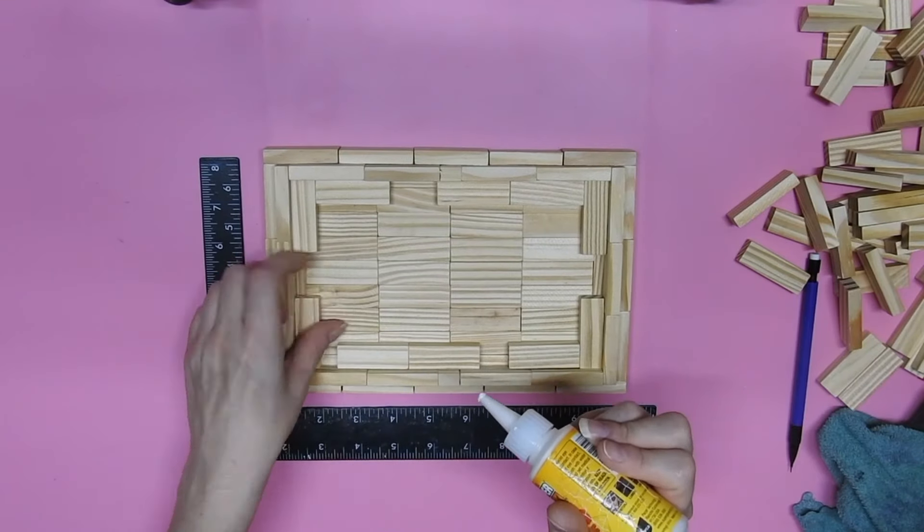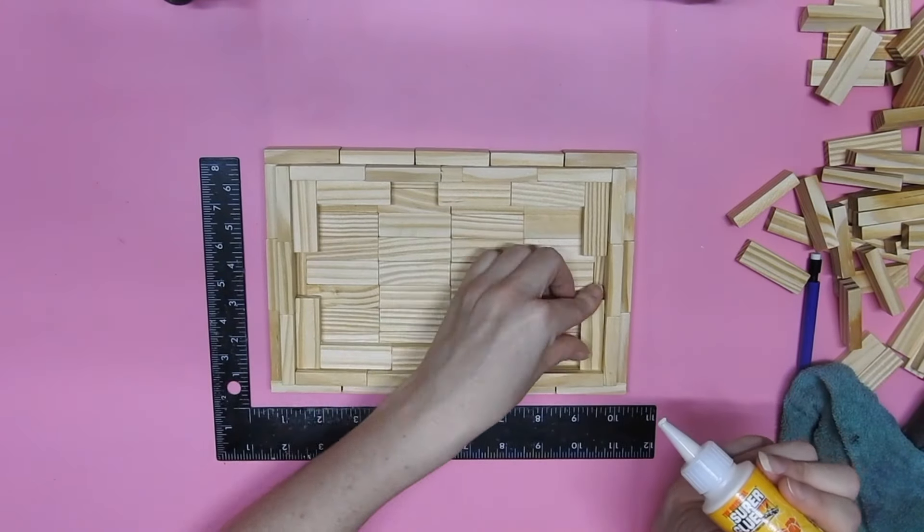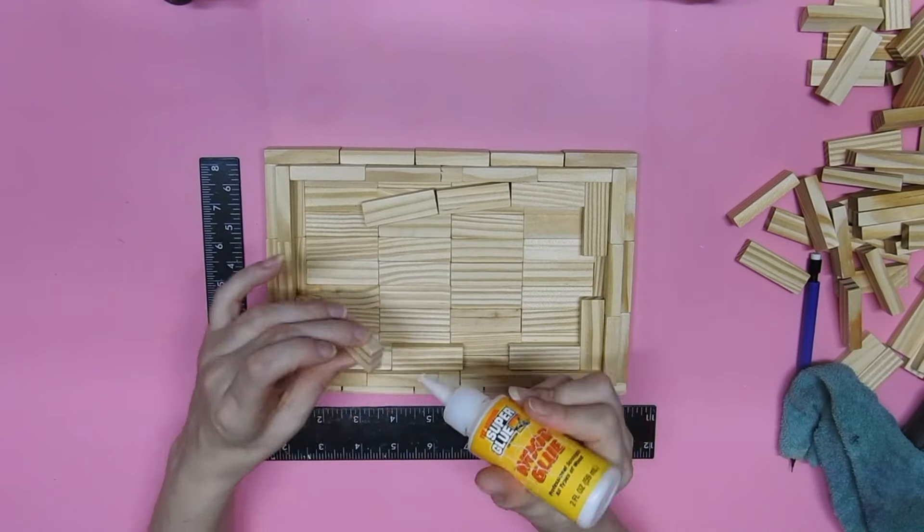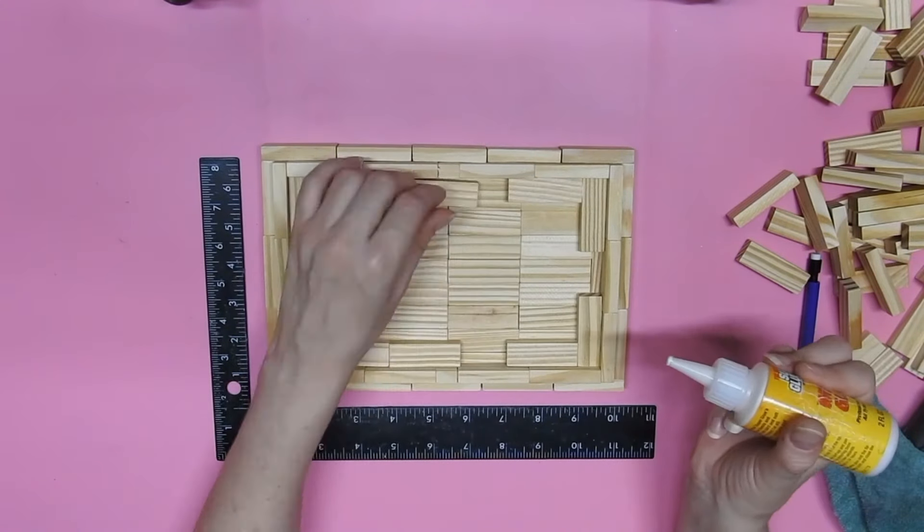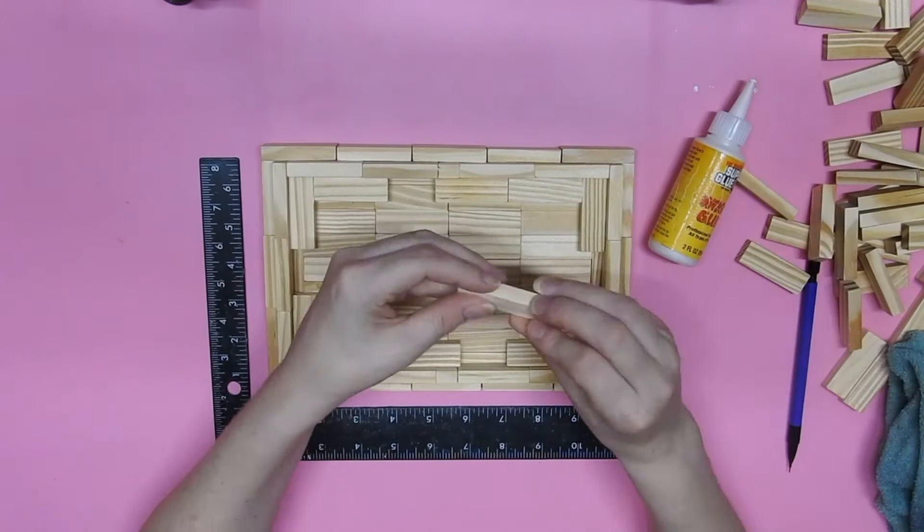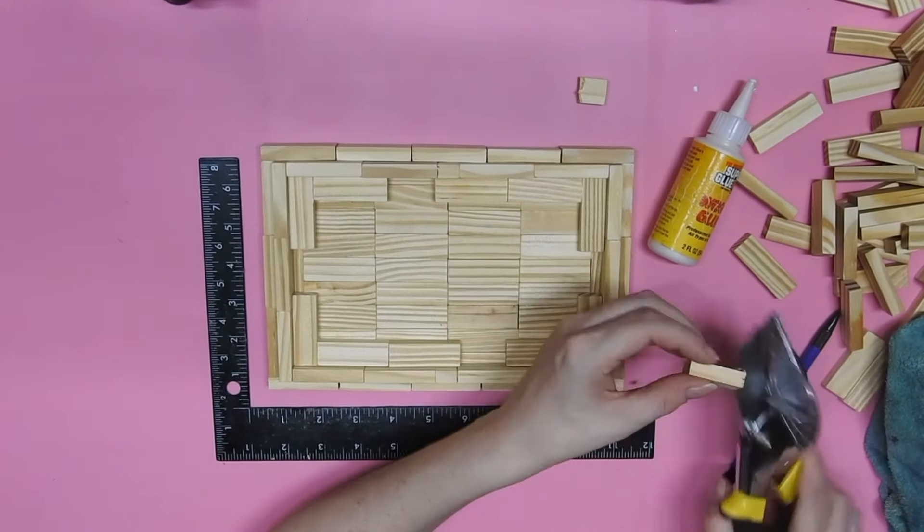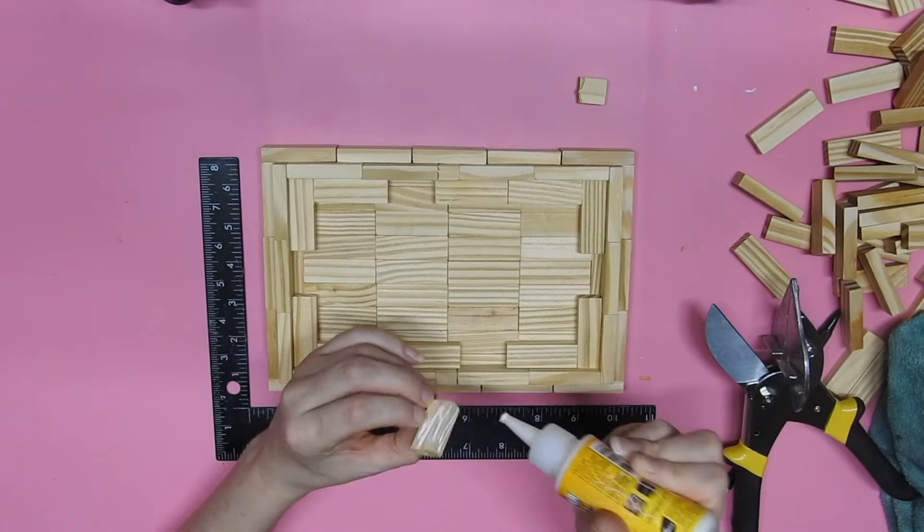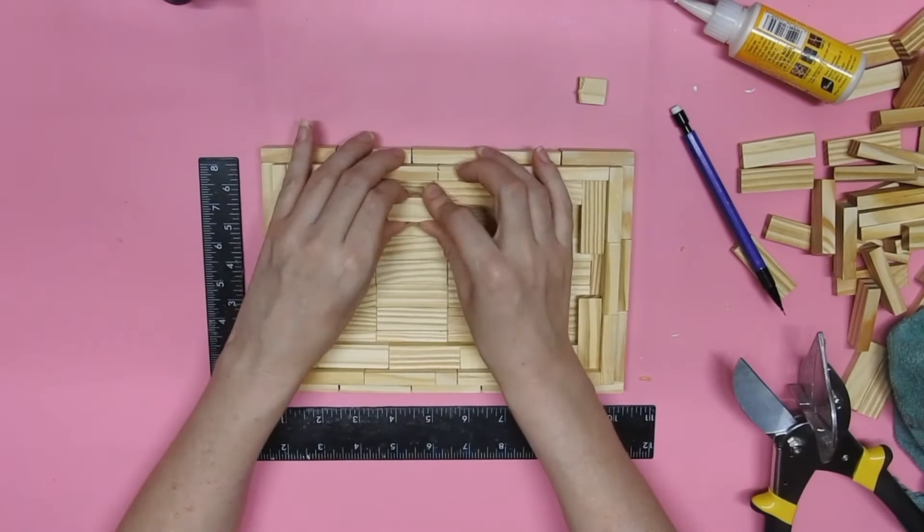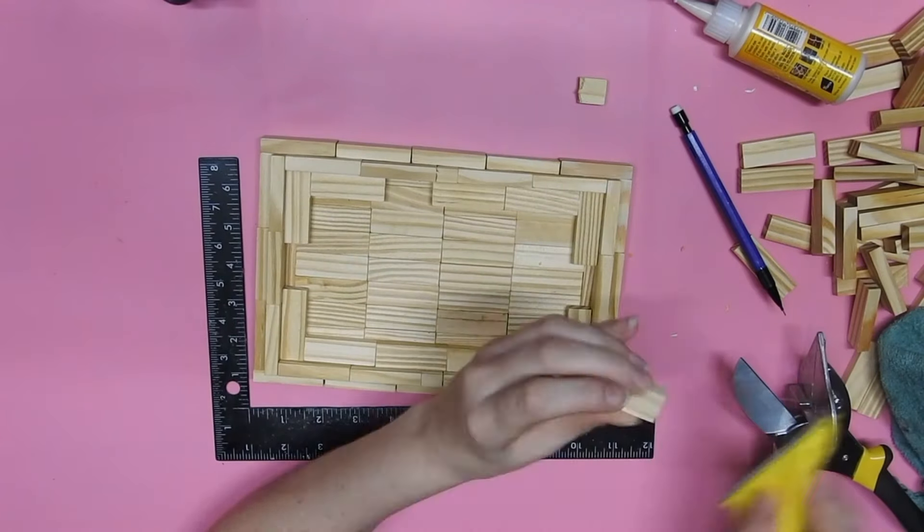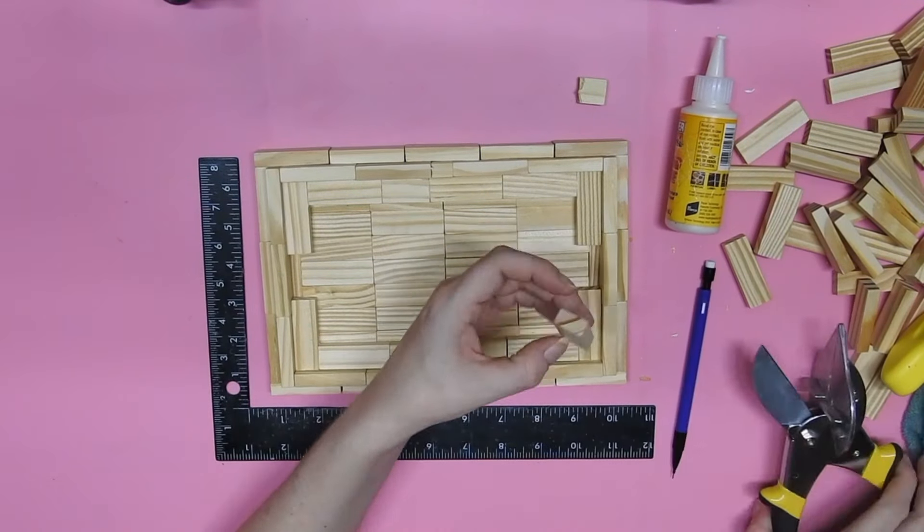And I did the other side. So now I am going in with some more tower blocks and I am laying them down flat. And I do have to cut these down. Well, I do have to cut down some tower blocks to fill in the gaps. So I just do the same thing. I just measure and then cut down with my miter shears. It seems like a lot but it actually is pretty quick. I am just going to do the other two sides now.